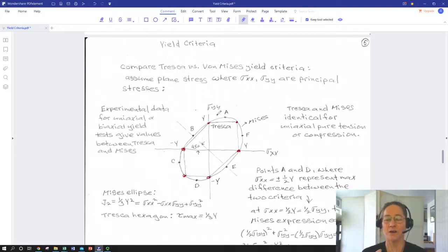In that sense the von Mises yield criteria is less conservative. It predicts you won't yield quite as early. The points where they are the furthest apart are these points A and F and C and D, which correspond to one half Y on the Tresca. If you are looking at those applied stresses and someone says which would you feel safer with, Tresca or von Mises, you should probably say Tresca because it is more conservative in that it will predict yielding at a lower applied stress, so it would lead to a more conservative design.